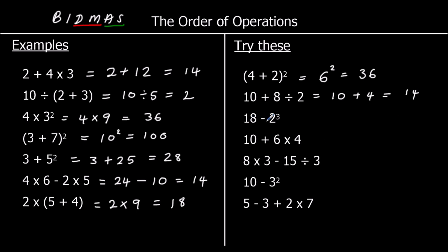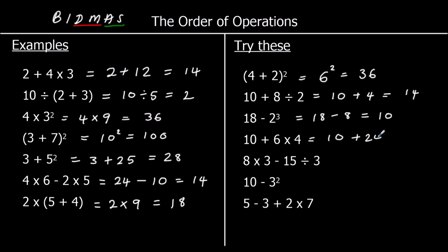Thirdly, 18 take away 2 cubed: no brackets, but we have indices. 2 cubed means 2 times 2 times 2, and that is 8. So we've got 18 take away 8, which is 10. The next one: no brackets, no indices, but we have a multiplication. 6 times 4 is 24, so we've got 10 plus 24, which is 34.